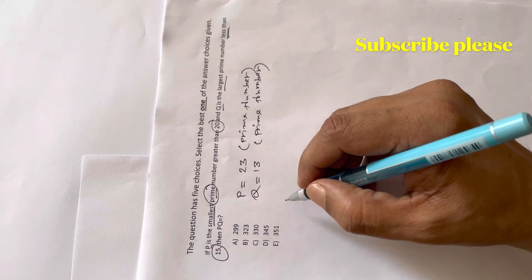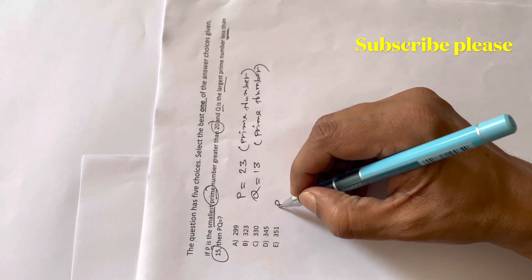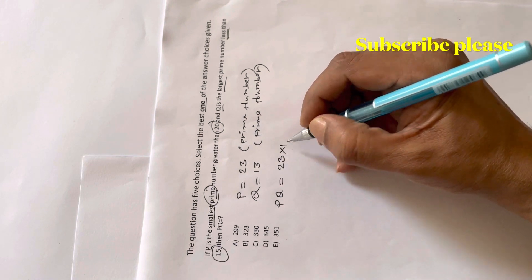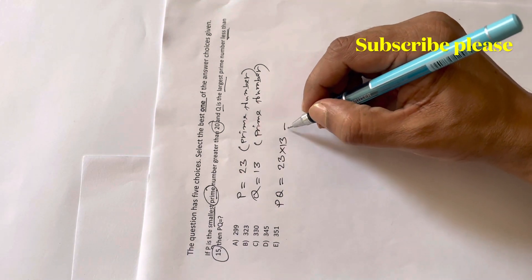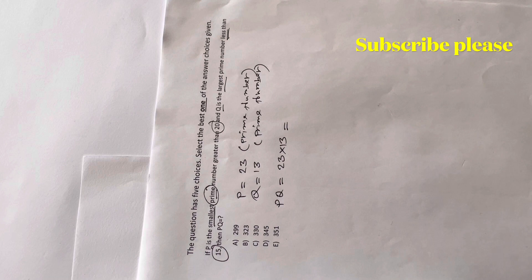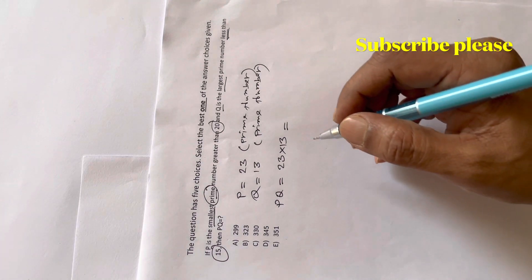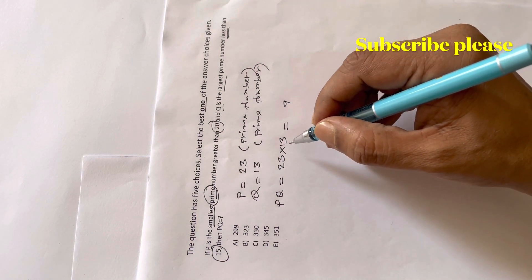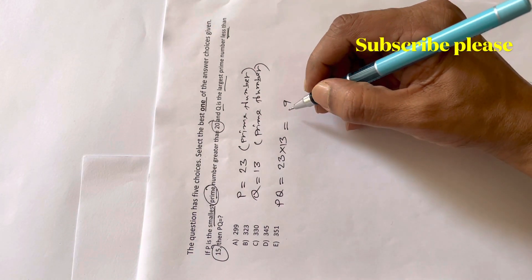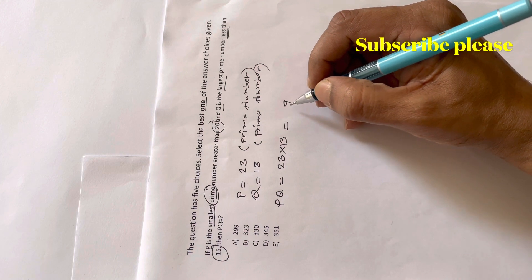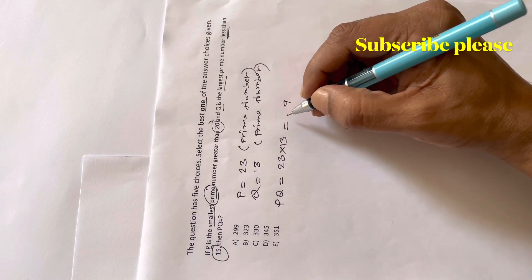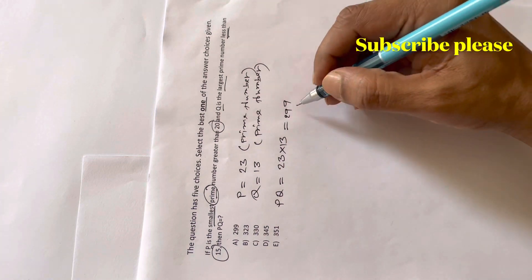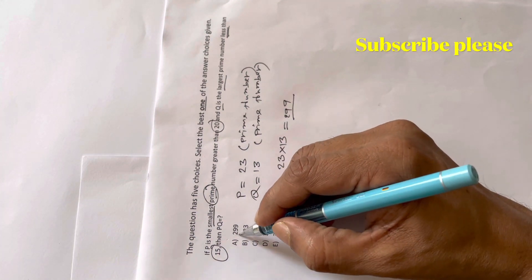So the answer pq will be 23 times 13, which equals 299. So the answer is 299.